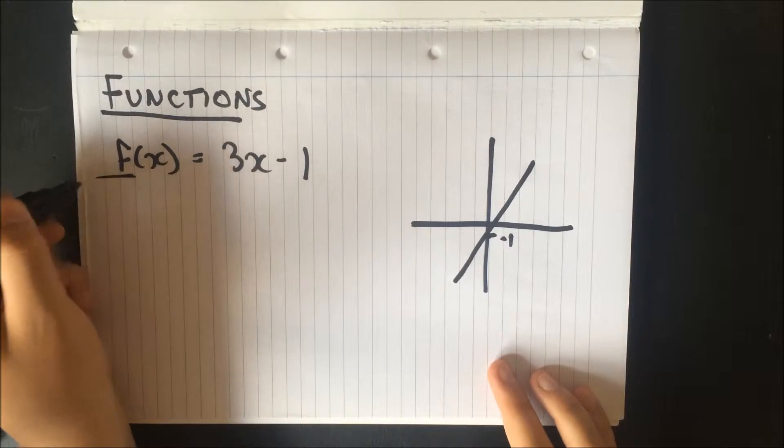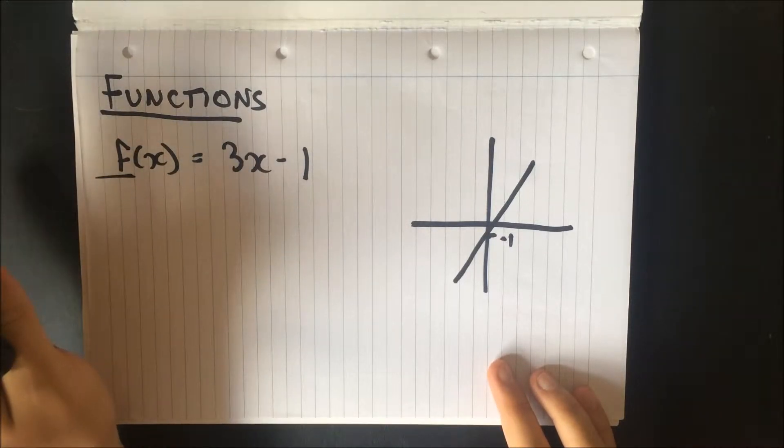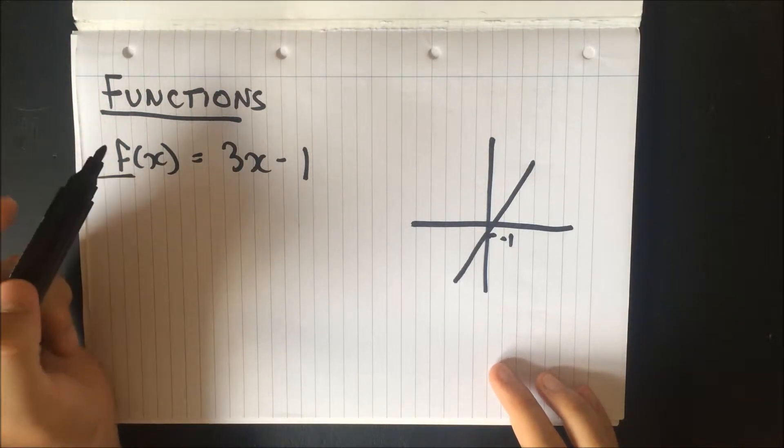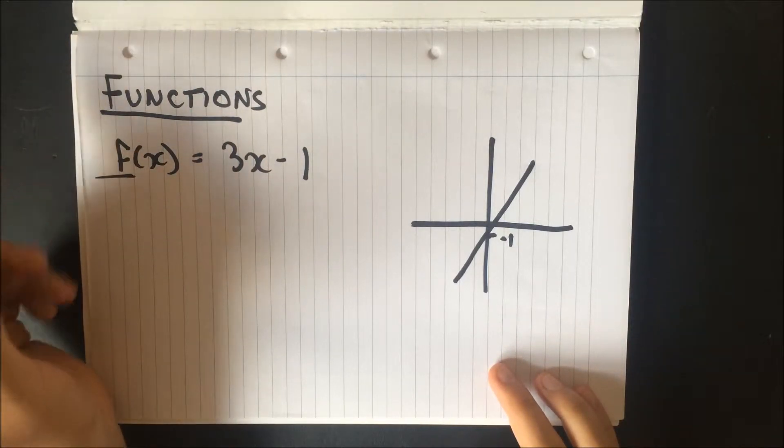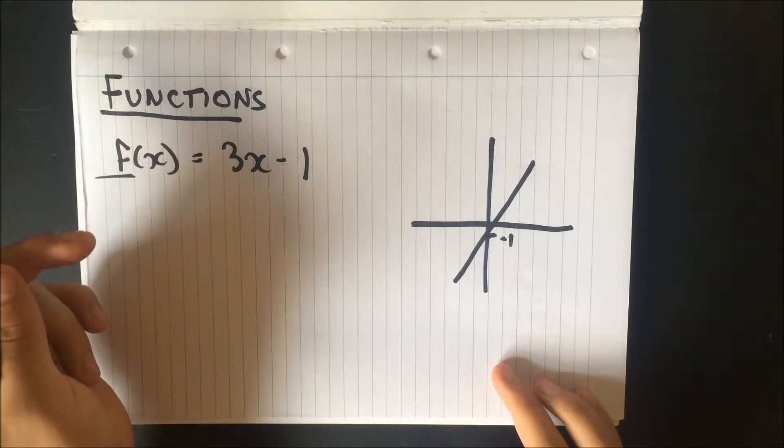So the function bit is the f bit. So this can be g(x), h(x), x(x), q(x). I usually use the f for anything really just because it's f, a function. It makes it easier.